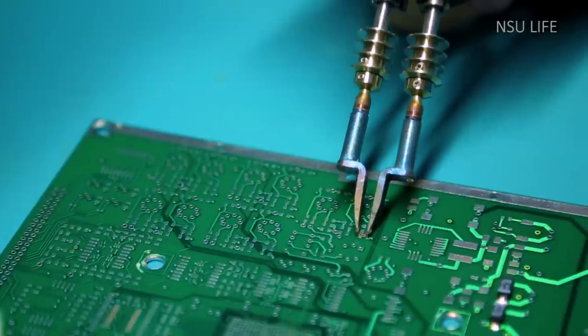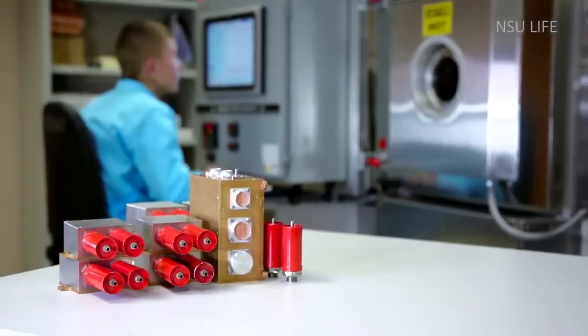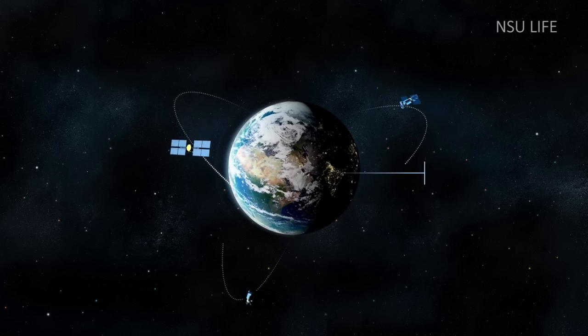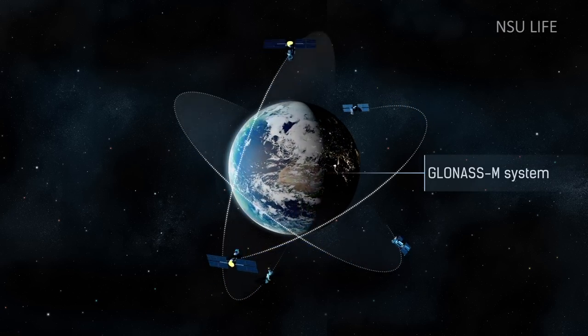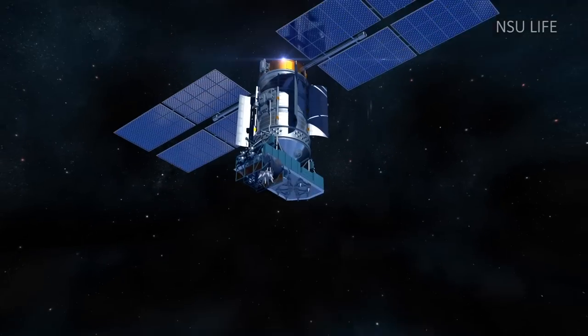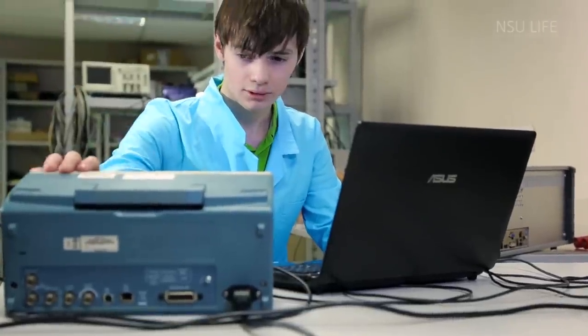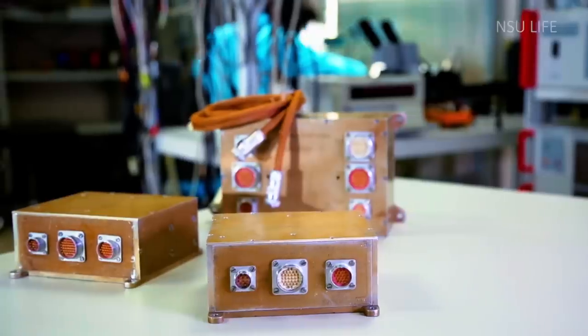Scientists from the Novosibirsk State University Atmospheric Division created the data measuring systems, which are now installed on all satellites of the GLONASS M series. Our students in the Physics Department take part in the development of such equipment.